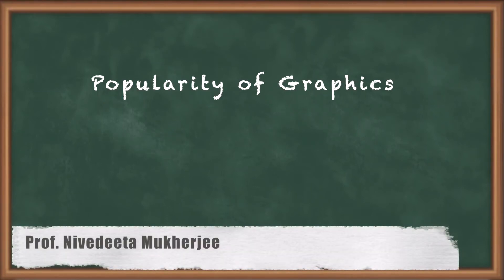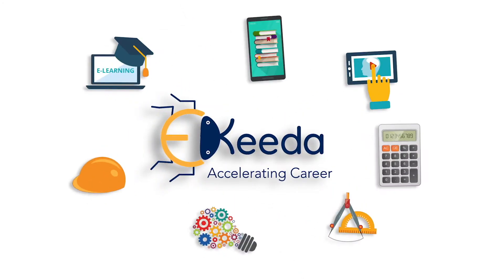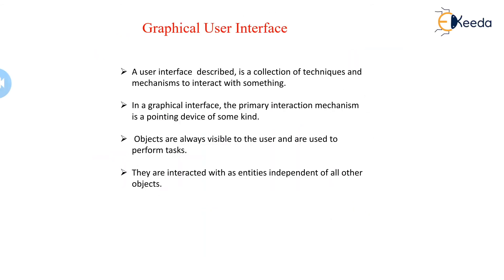Let us study Chapter 3: Graphical User Interface. The graphical user interface is a collection of techniques and mechanisms which helps to interact with something — maybe a device, or with the help of a device or any other instrument or tool. In a graphical interface, the primary interaction mechanism is a pointing device of some kind. Whatever the user interacts with is a collection of elements referred to as objects.